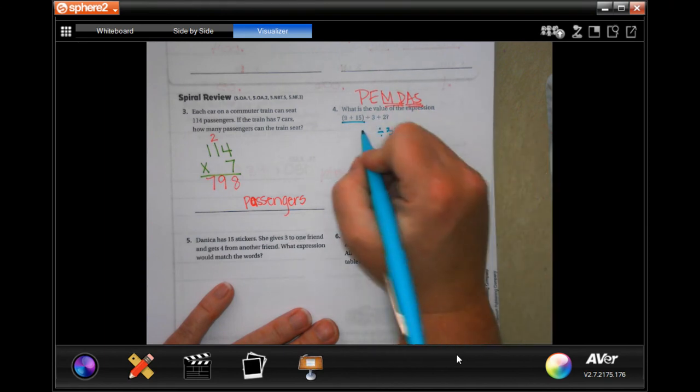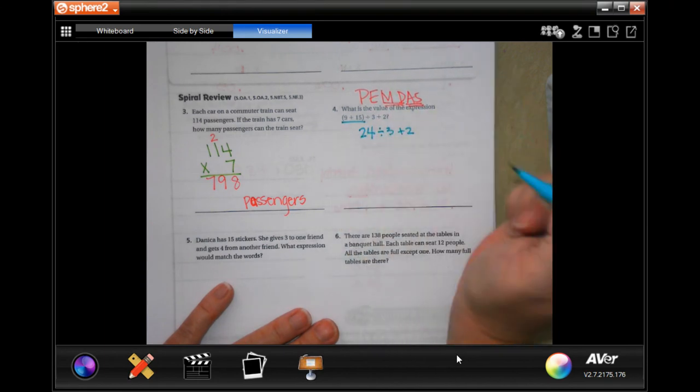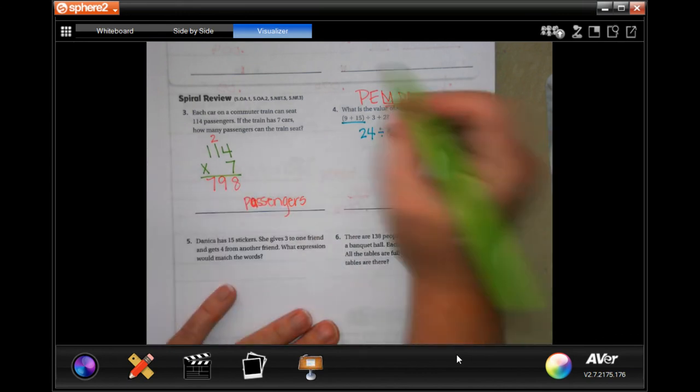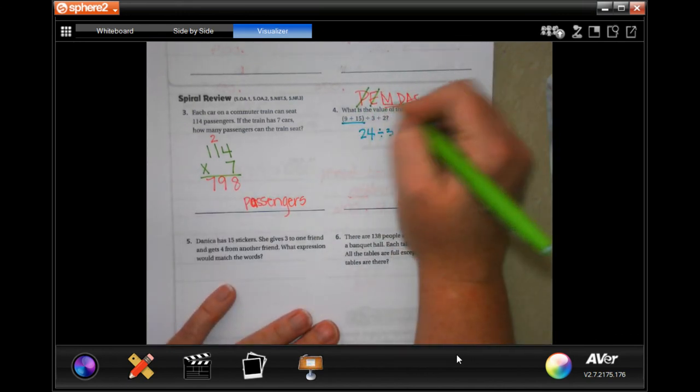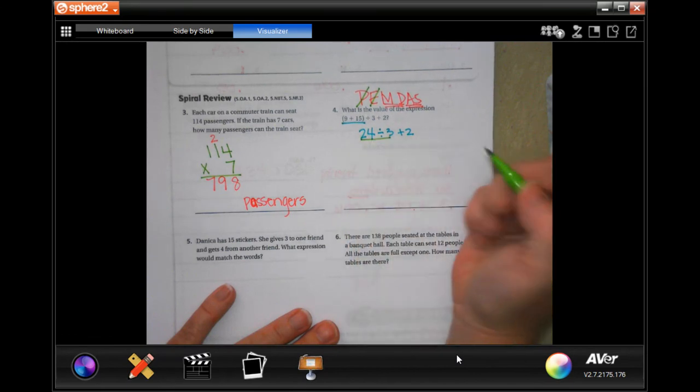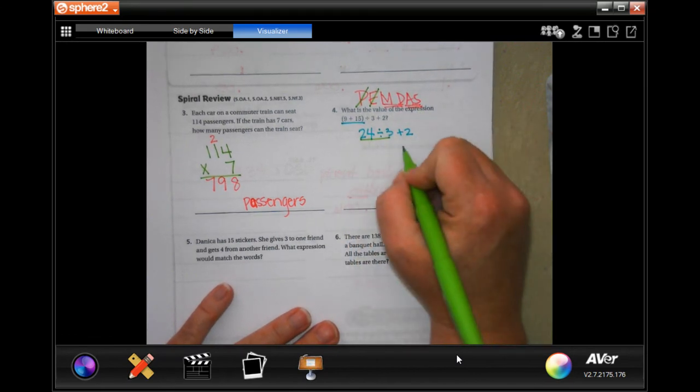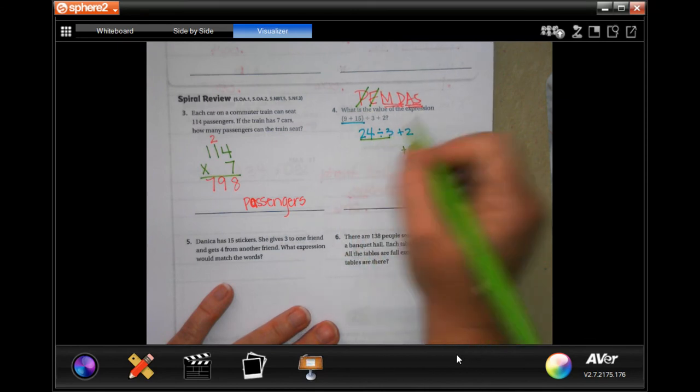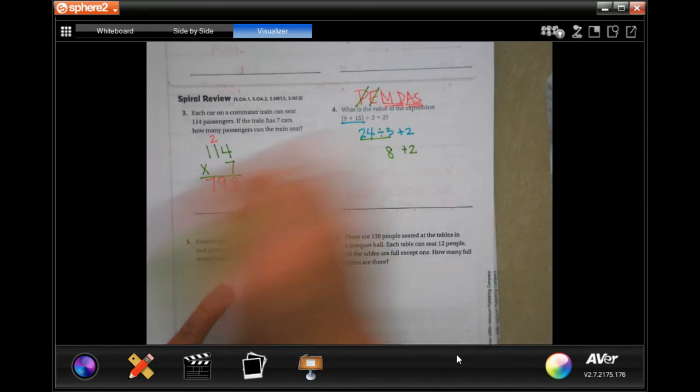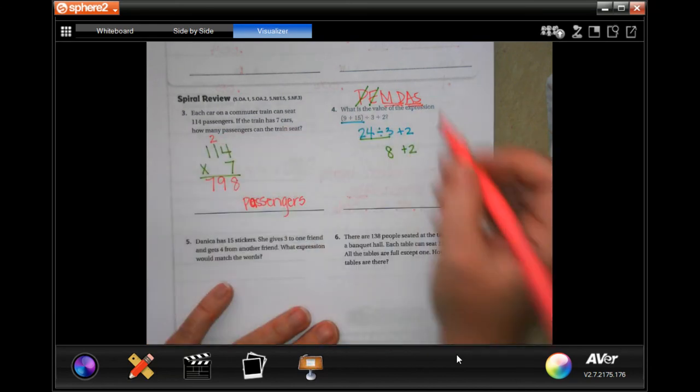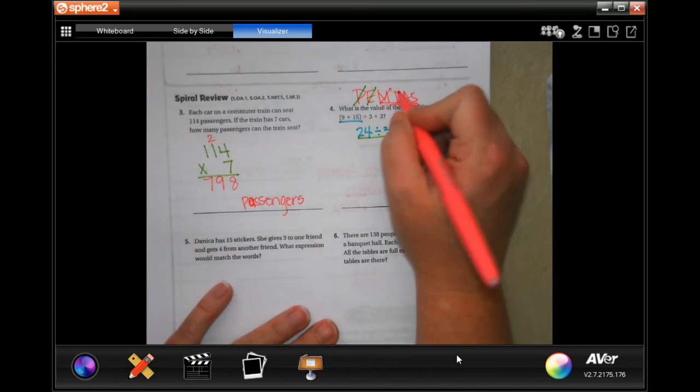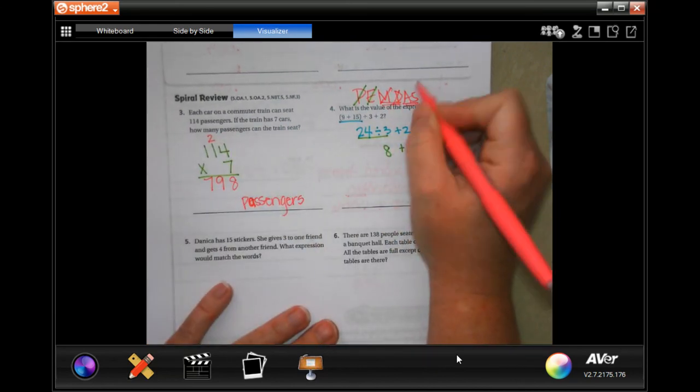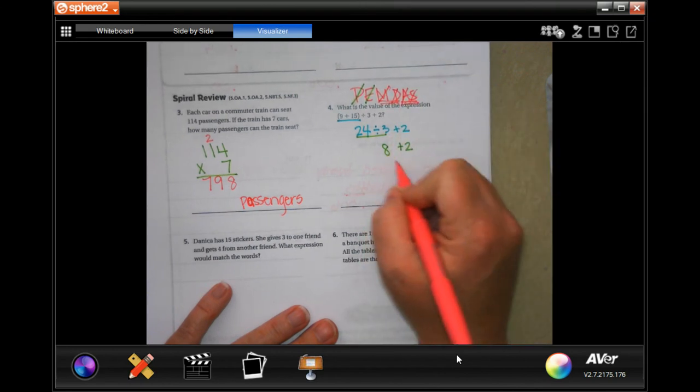So 9 plus 15, well I know that that's 24. So now I've done my parentheses, I don't have any exponents. Multiplication and division, I've got that right here. So I'm going to rewrite plus two because that's not going to disappear. I know that 24 divided by three is eight. So now, addition and subtraction. I have addition. Eight plus two, ten.